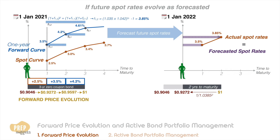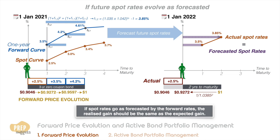So in 2022, your bond has two years to maturity. If the actual spot rates turn out to be exactly as forecasted, we should discount the bond by the two-year spot rate of 3.85 percent, so it should be priced at 0.9272. Based on the price one year earlier, we get exactly a 2.5 percent gain in the first year, which is the expected gain. This example illustrates that if spot rates go as forecasted by the forward rates, the realized gain should be the same as the expected gain.